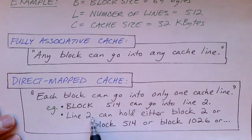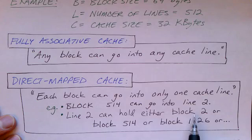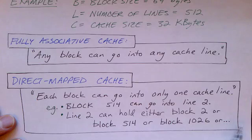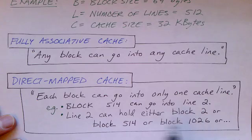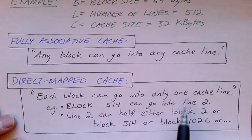And likewise, line two can only hold certain blocks. It might hold block number two, or it might hold block number 514, or it might hold block 1026. And there could be many other possible blocks that could go into line two. But each block in main memory can only be put into one particular line.